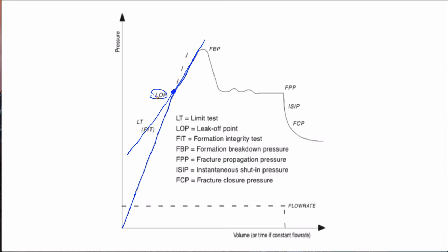If you continue to pump — and the reason for doing this longer is just to get more and more accurate measurements — eventually this curve will turn over. This is called the formation breakdown pressure, FBP, and what's happening there is now you have runaway crack growth. Your fracture is growing faster, adding volume faster than you can fill it, and so the pressure drops. Eventually that'll stabilize, and you'll get a plateaued region called the fracture propagation pressure.